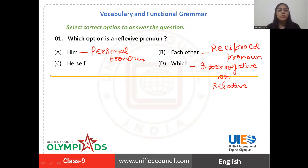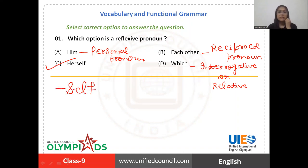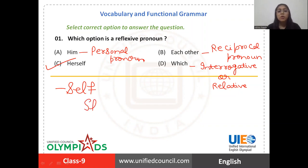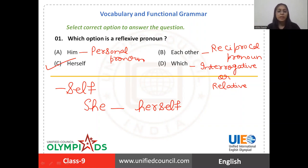So we are left with only one option, which is 'herself'. Words ending in 'self' are reflexive pronouns. For example, for 'I' it is 'myself', for 'he' it is 'himself', and likewise for 'she', the reflexive pronoun is 'herself'. There are many more like 'ourselves' and 'themselves'. So 'herself' is the reflexive pronoun among the given options, and the right answer is option C.